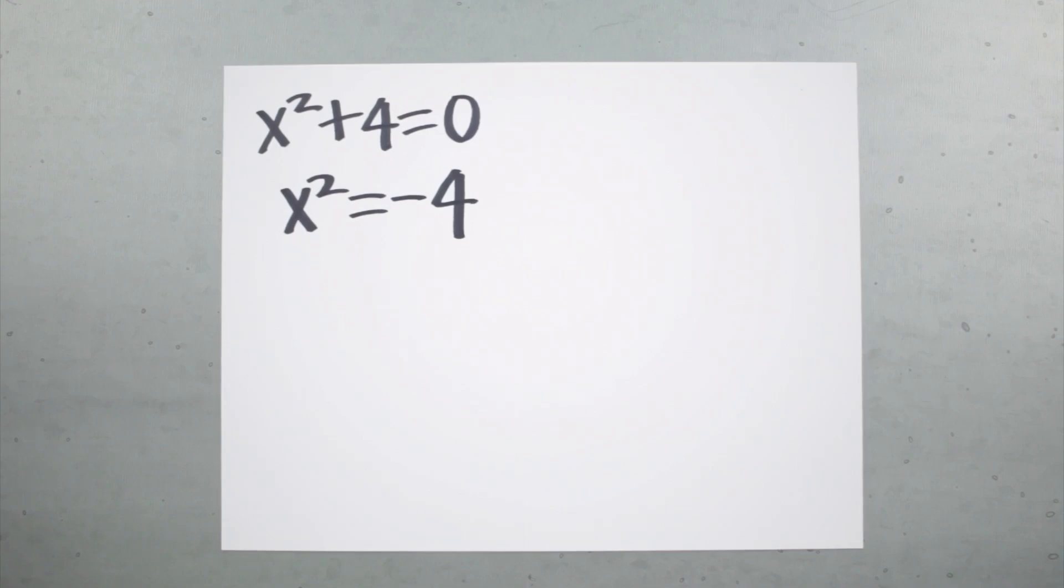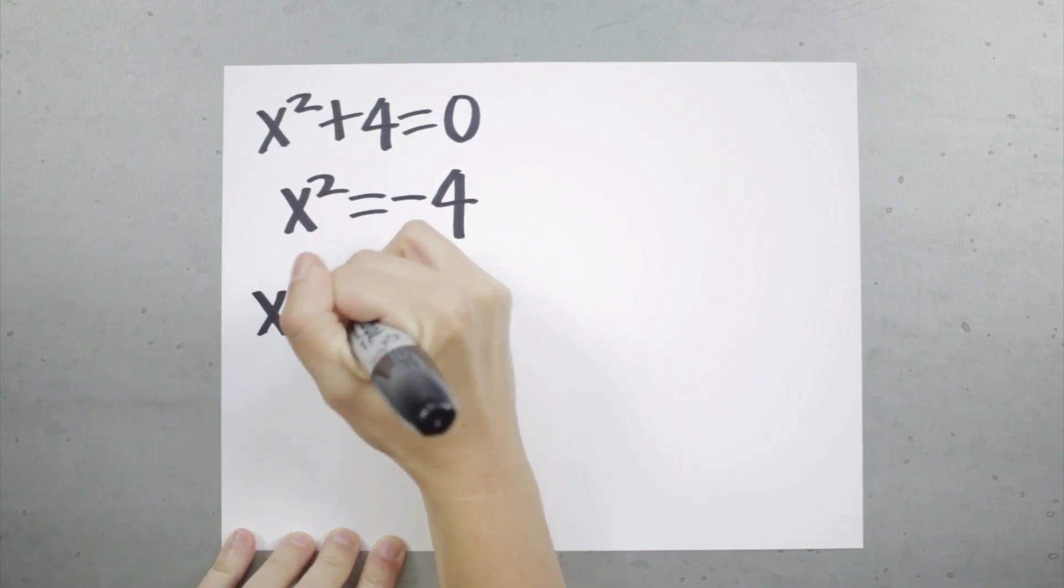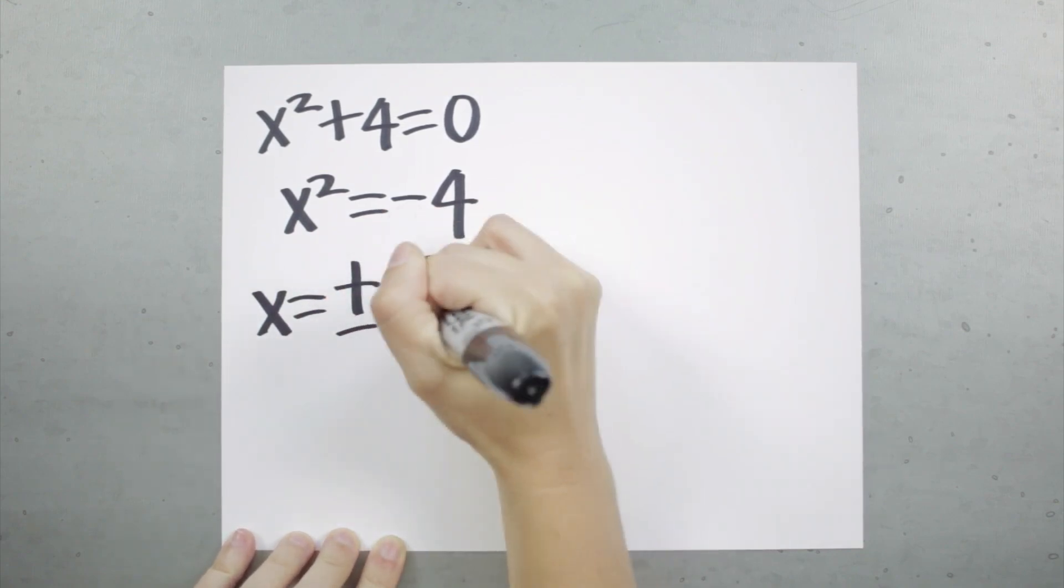But with i, we actually can solve this. If we take the square root of both sides, we get x as positive or negative square root of negative 4.